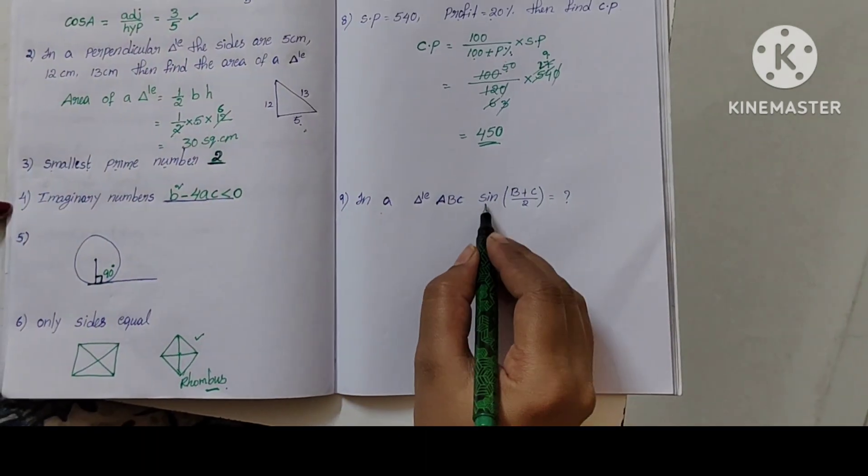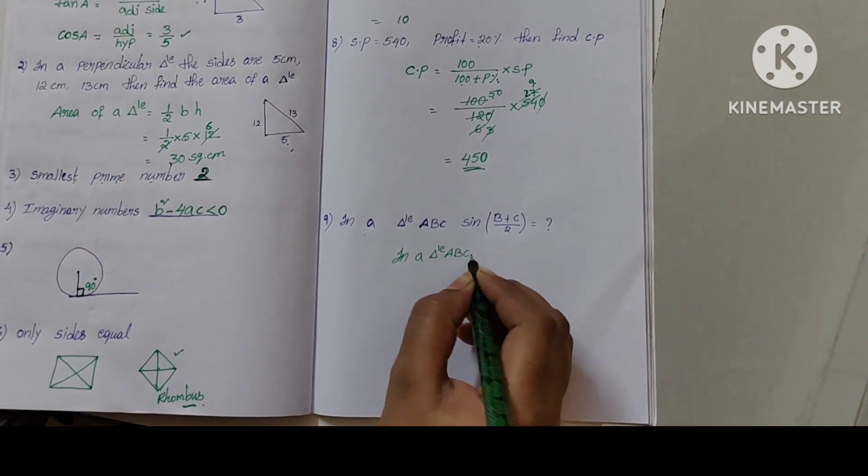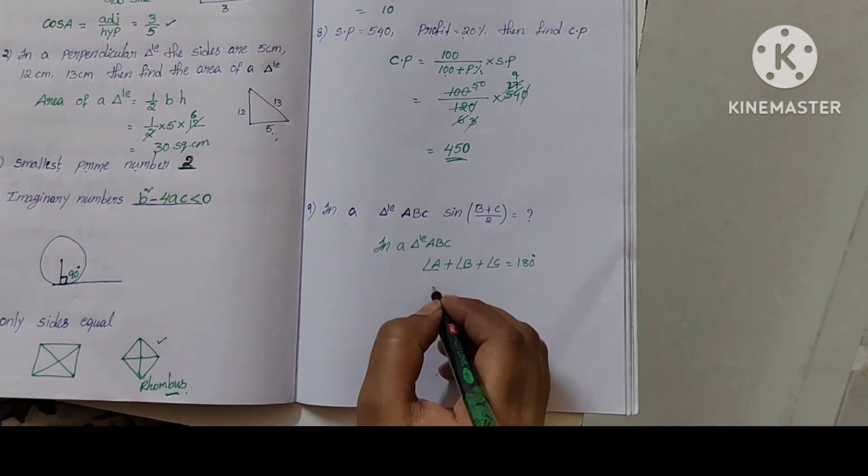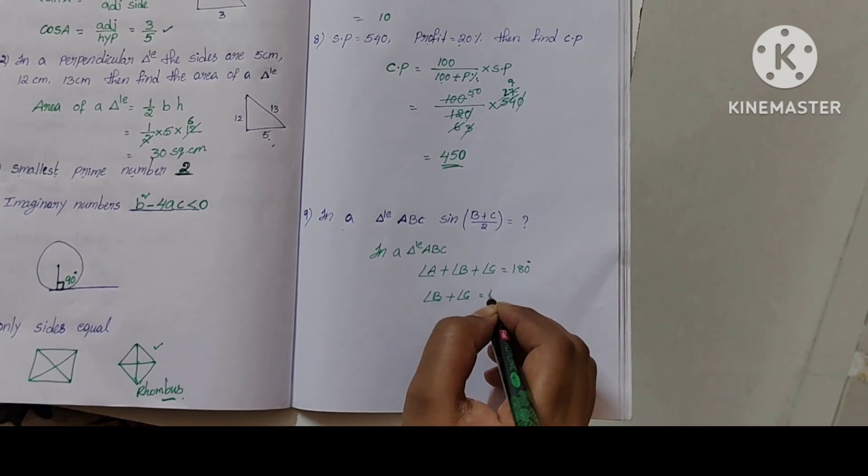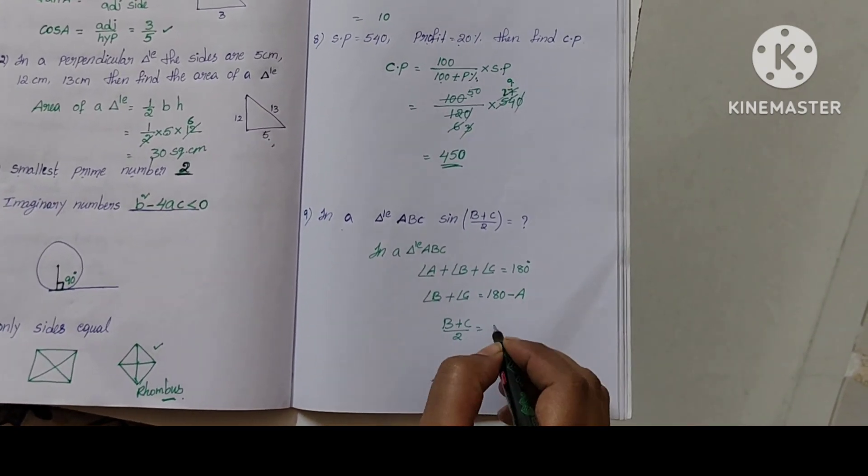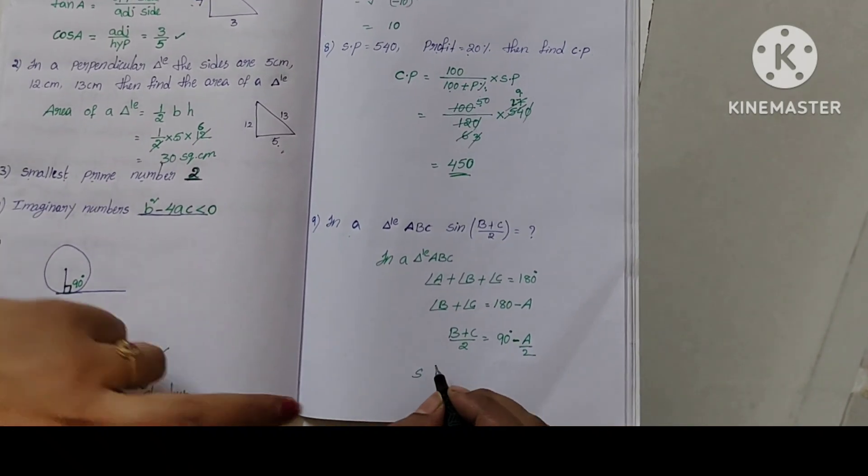Then in triangle ABC, sin of (B plus C) by 2 equal to. In triangle ABC, three angles: A plus B plus C equal to 180 degrees. Divide both sides by 2, you get 90 minus A by 2.